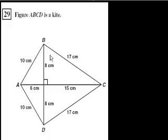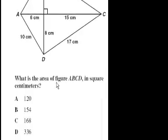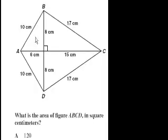Figure ABCD is a kite, and it looks like a kite. What is the area of figure ABCD in square centimeters? Well, everything they're giving us is in centimeters, so if we just stay in centimeters, we won't have a problem. We just have to figure out the area of each of these triangles. The area of a triangle is equal to 1 half base times height.